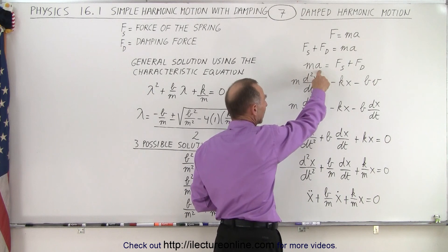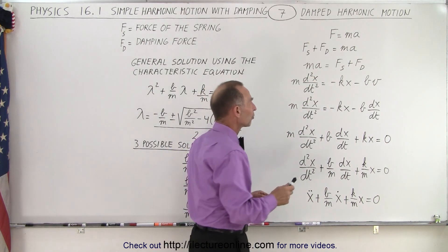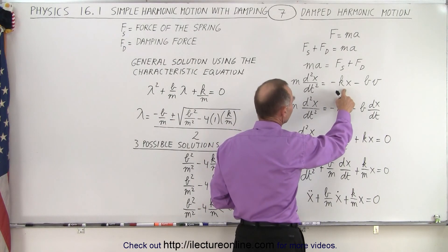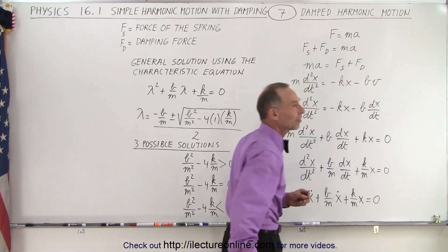And instead of A, we can write it as a second derivative of a position with respect to time. The force caused by the spring is minus kx and the force caused by the damping effect is minus some constant times the velocity.